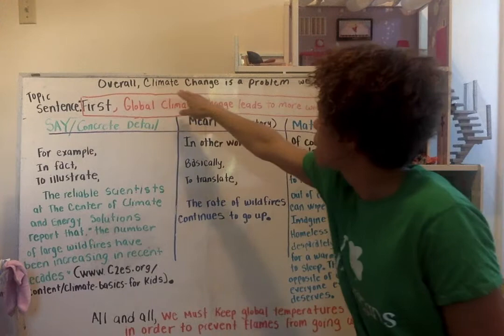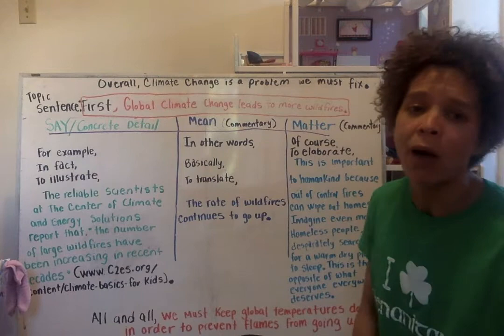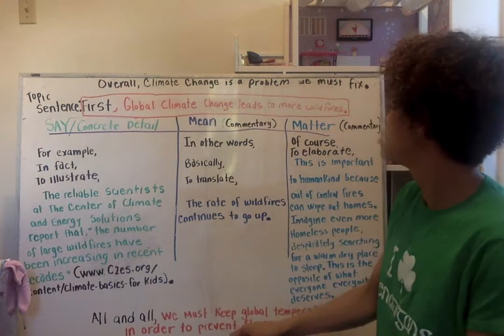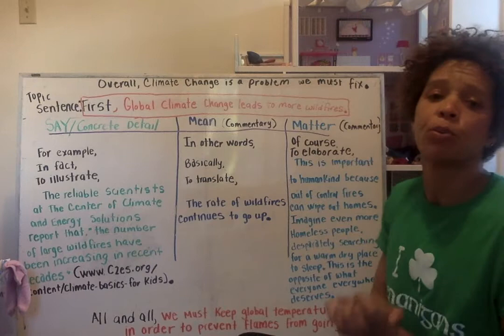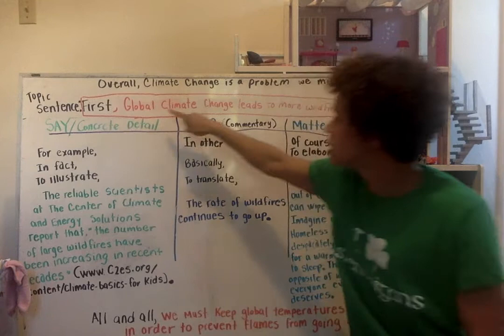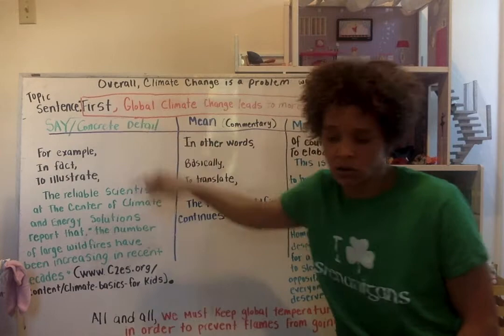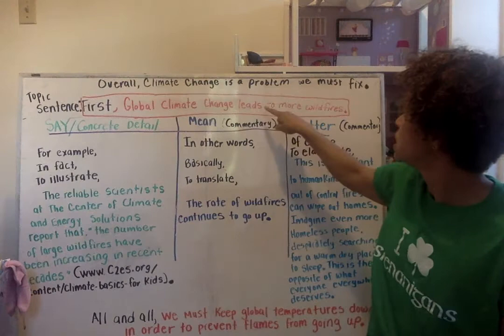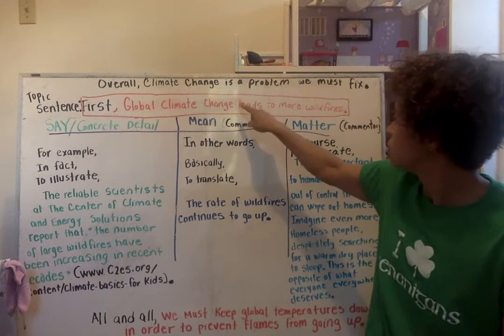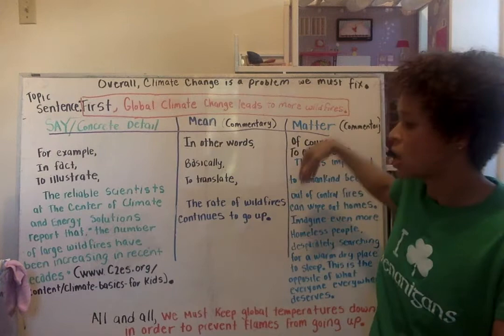Up here I just wrote our thesis statement. Our thesis statement is what drives the whole essay — it's in the last sentence of our introduction. Overall, climate change is a problem we must fix. So our whole essay is going to talk about how it's a problem and give reasons why we must fix it. Right here in this format I wrote the topic sentence for our first body paragraph. I started with a transition: First, global climate change leads to more wildfires. My whole first body paragraph is going to be about how global climate change causes more wildfires, and that's all I can talk about — that's got to be the focus.